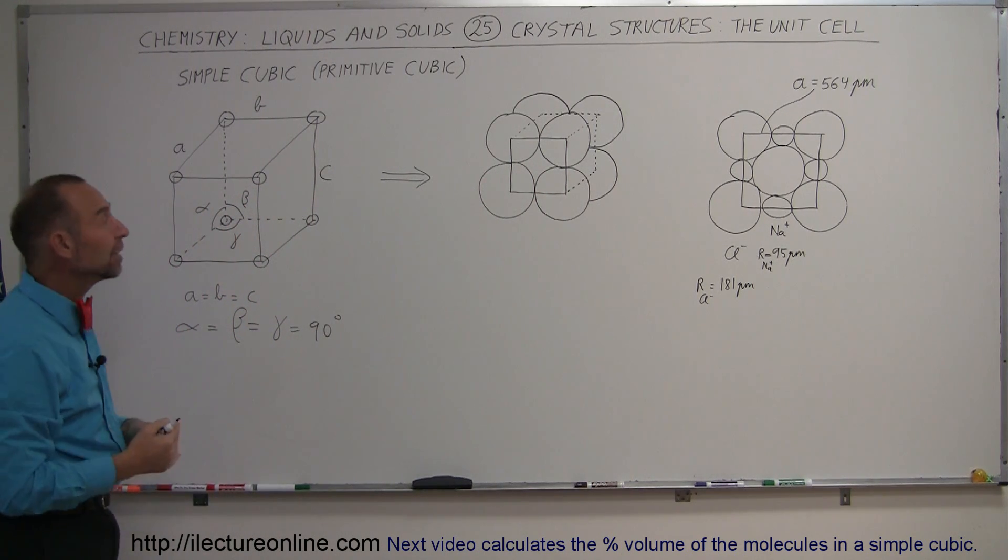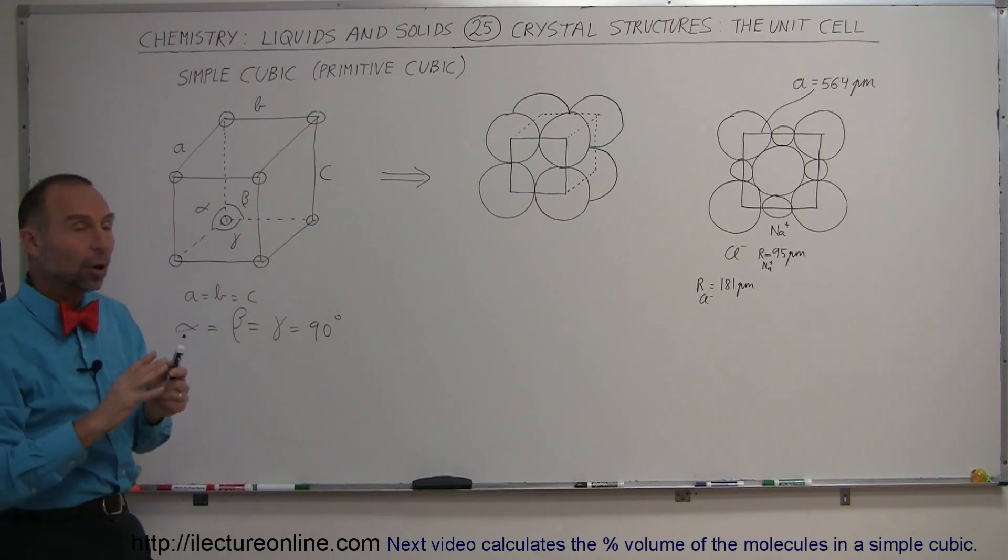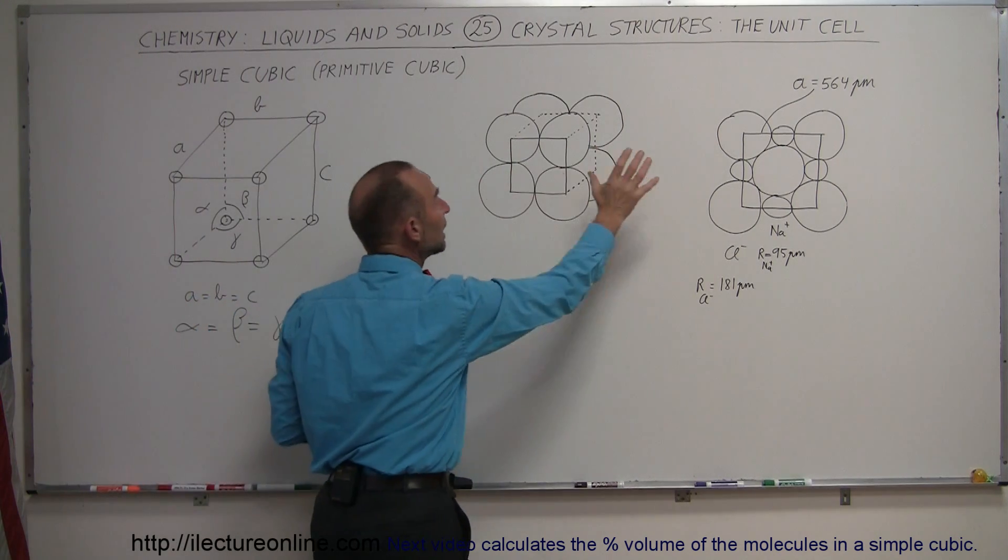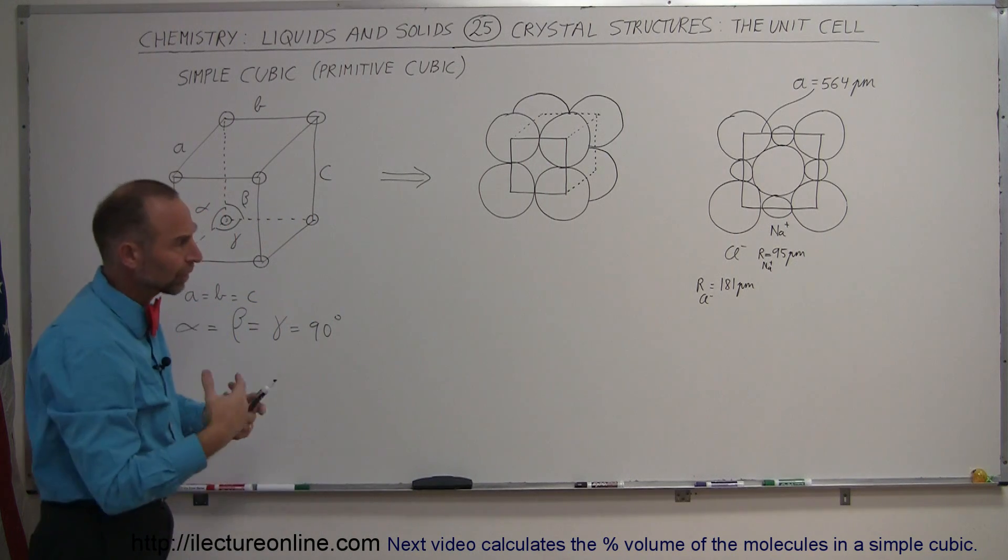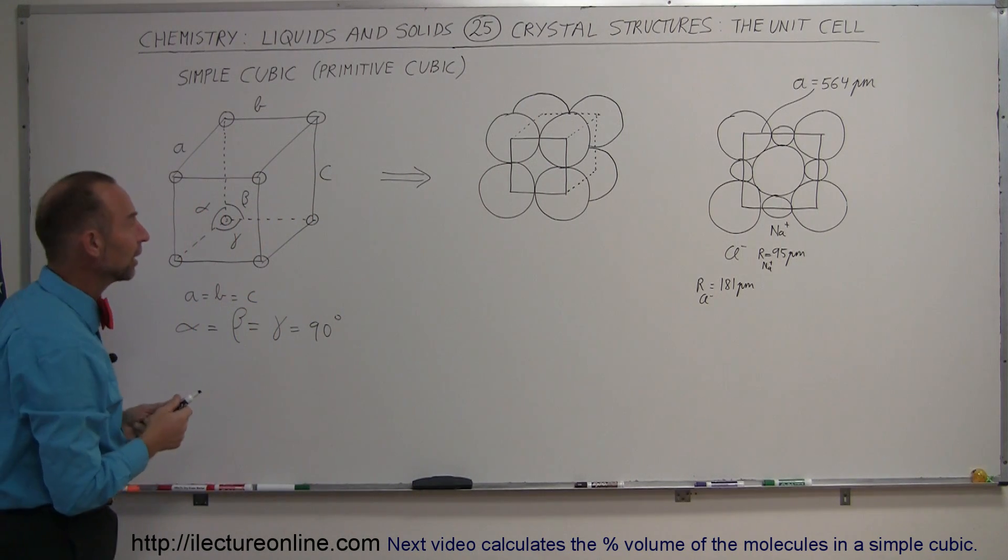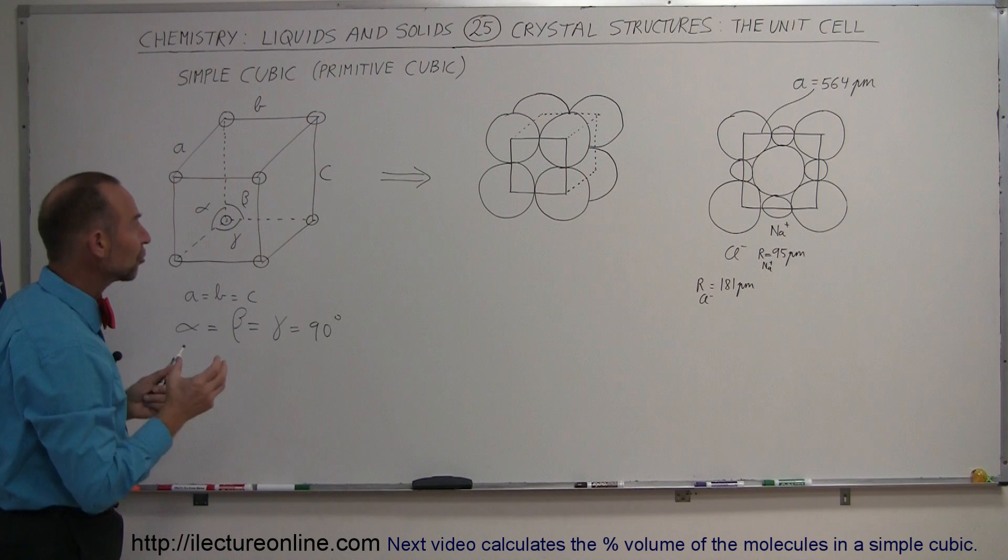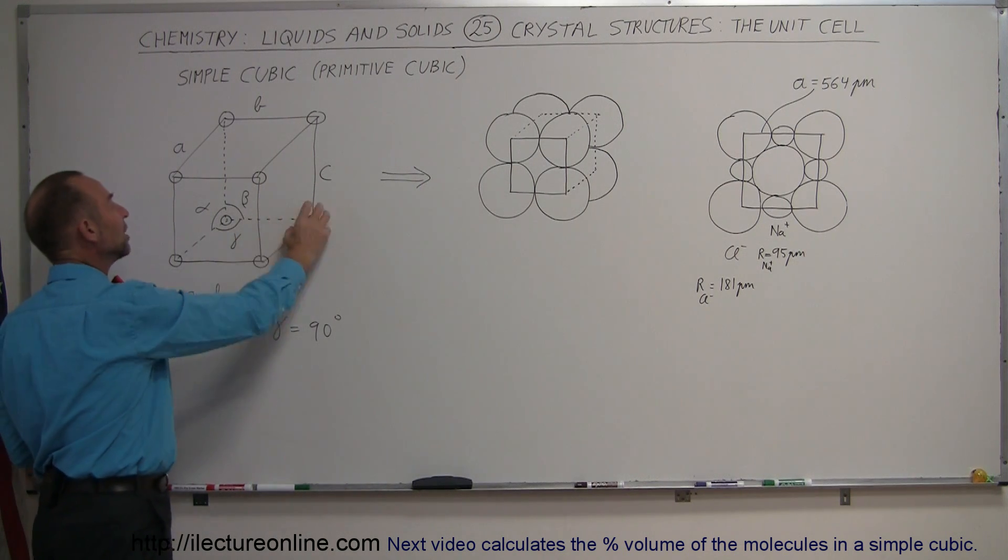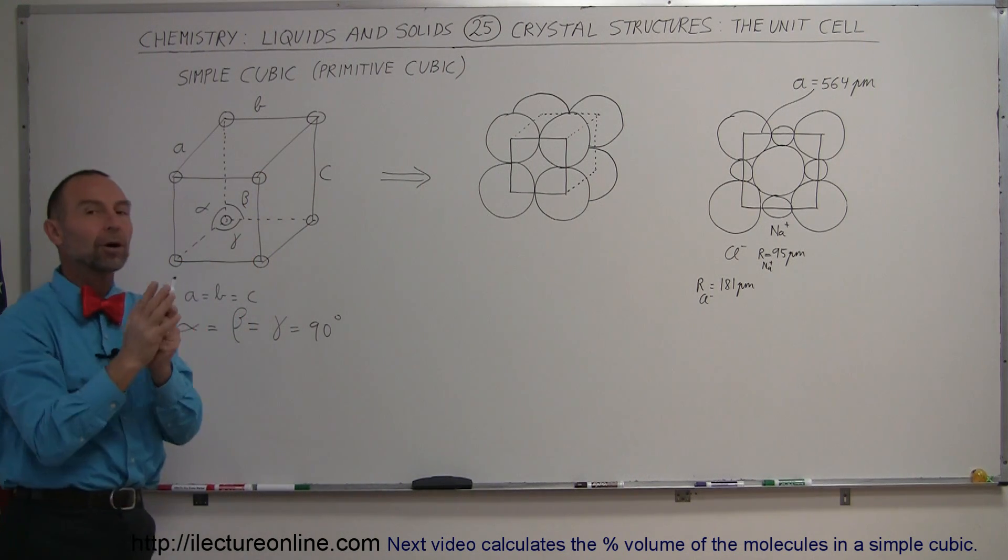So what we're going to do in the next so many videos, we're going to try and figure out what is exactly contained within each unit cell, depending upon what the crystalline structure is, what the atoms and ions are involved in the crystalline structure. Try to figure out how much of each atom within the structure is part of the unit cell.